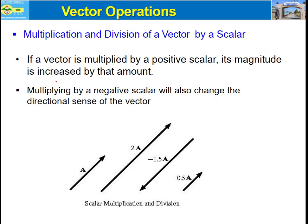Now let's look at vector operations. Starting with multiplication and division of vectors by scalars: if a vector is multiplied by a positive scalar, its magnitude is increased by that amount. If a vector is multiplied by a negative scalar, the vector changes its directional sense.